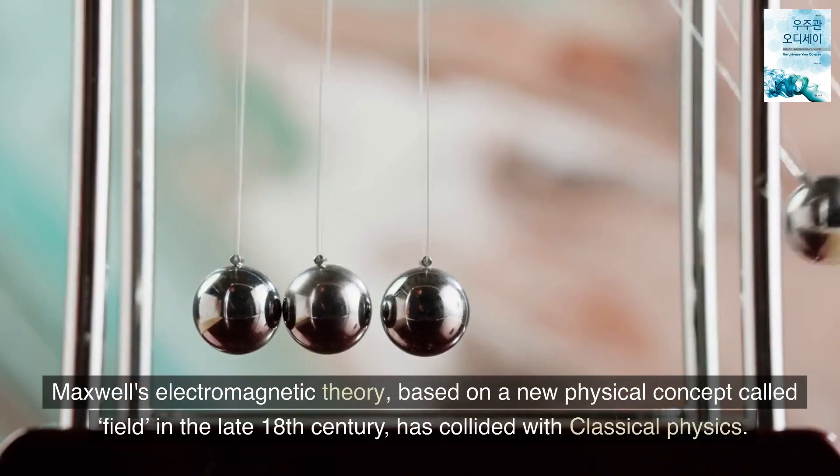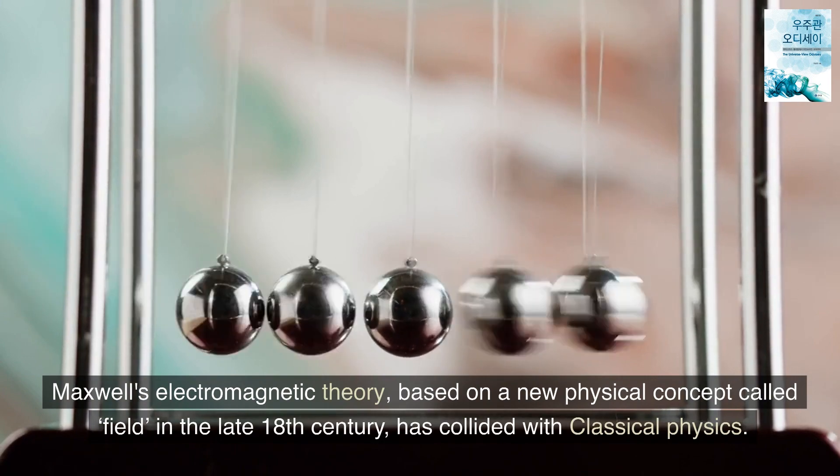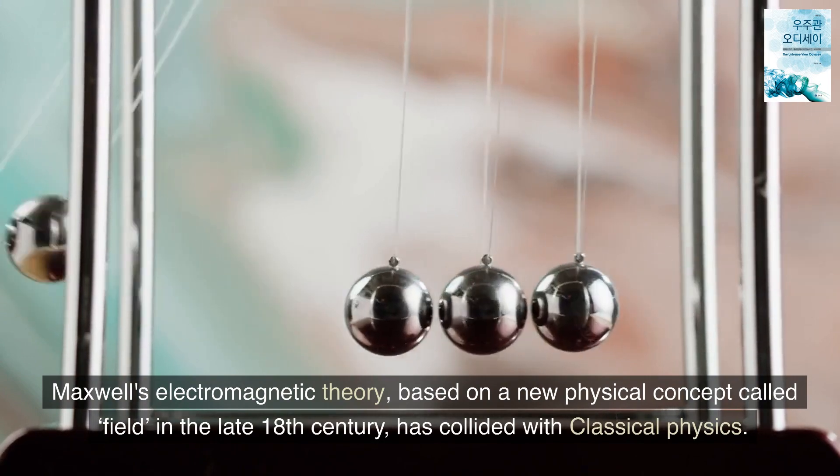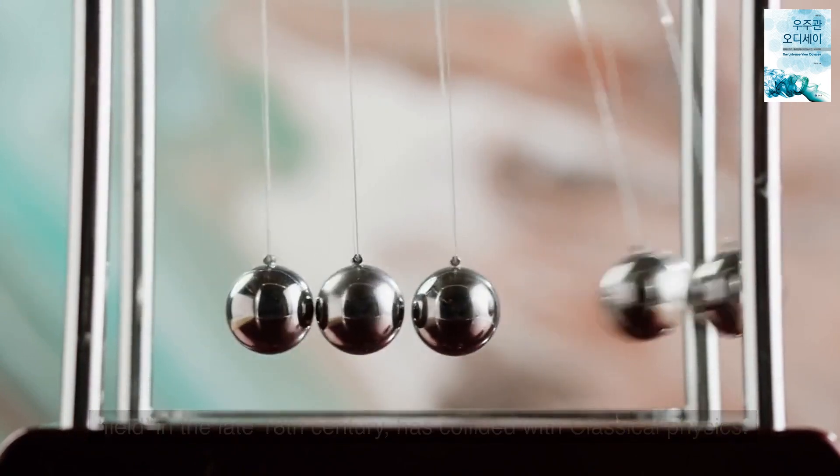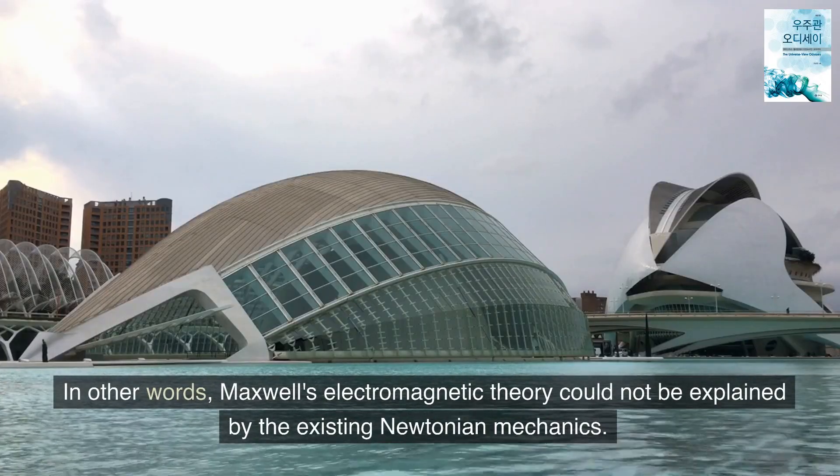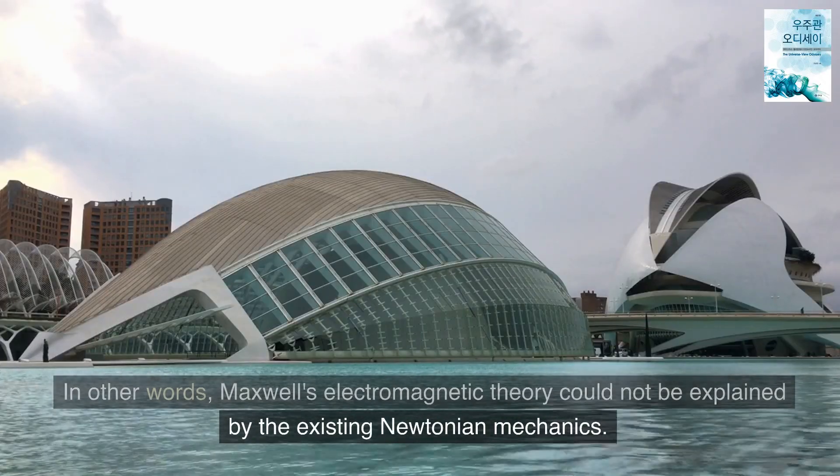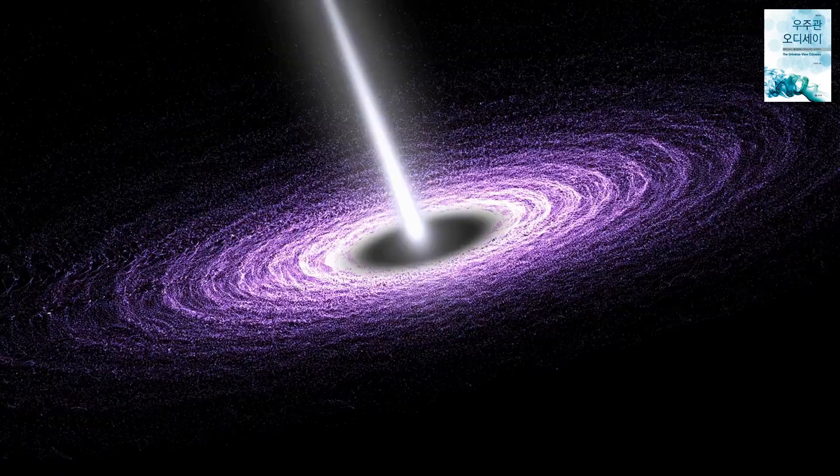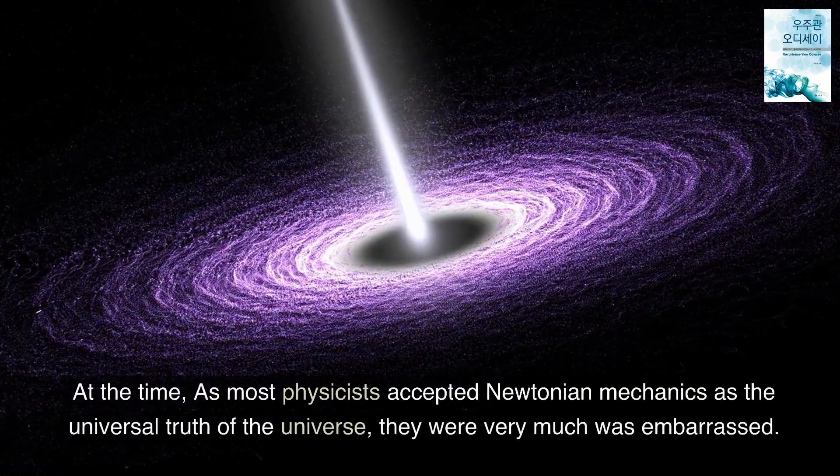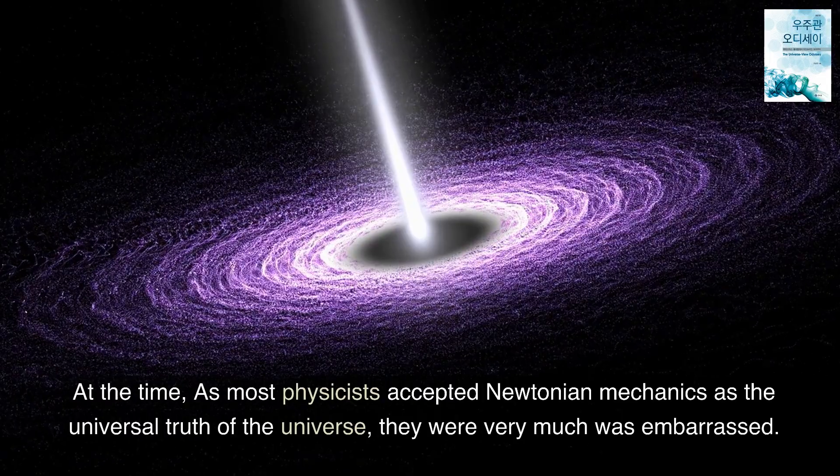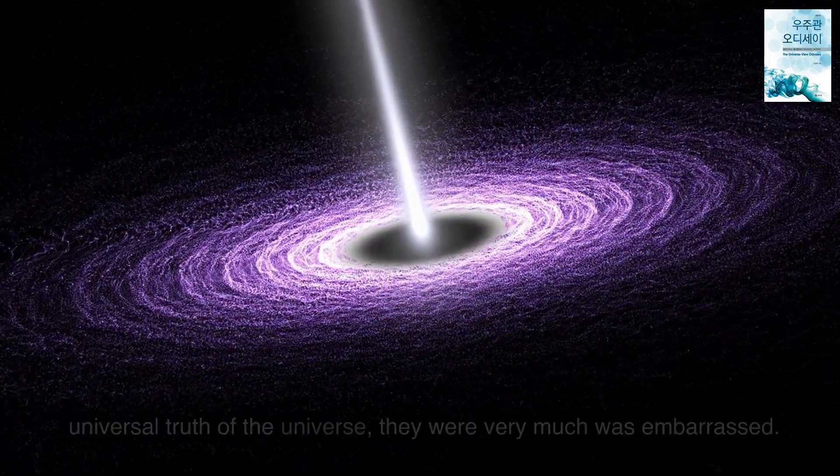Maxwell's electromagnetic theory, based on a new physical concept called field in the late 18th century, has collided with classical physics. In other words, Maxwell's electromagnetic theory could not be explained by the existing Newtonian mechanics. At the time, as most physicists accepted Newtonian mechanics as the universal truth of the universe, they were very much embarrassed.